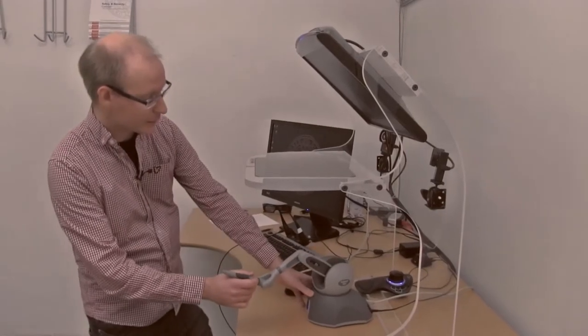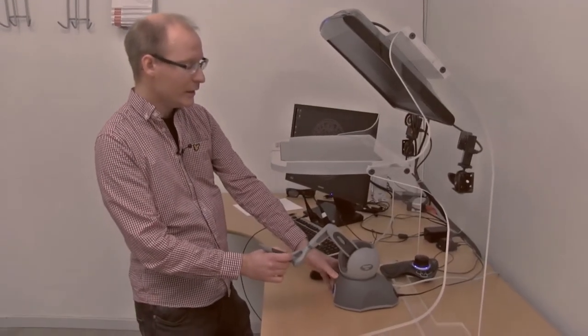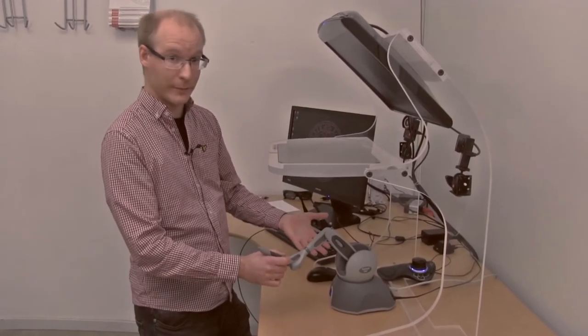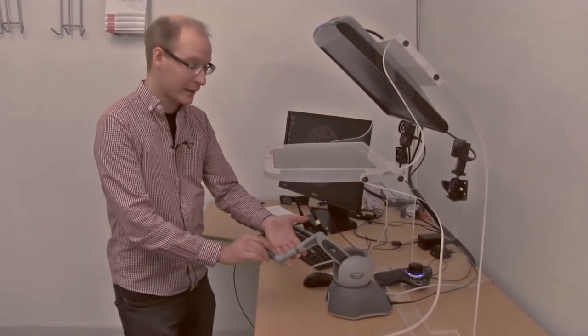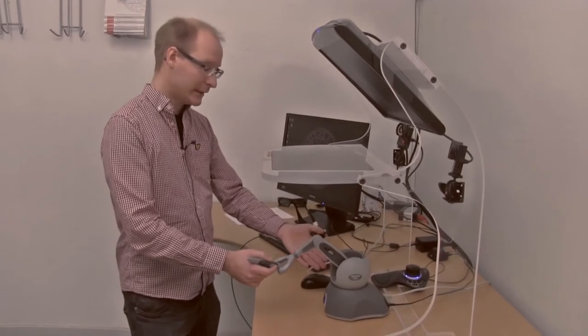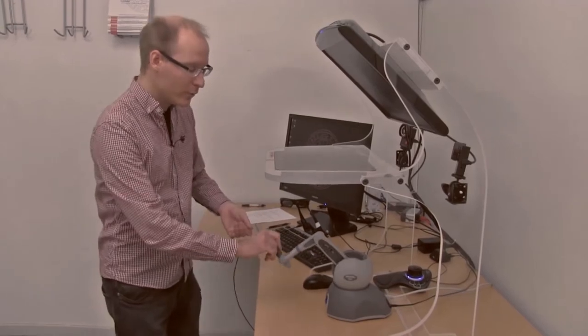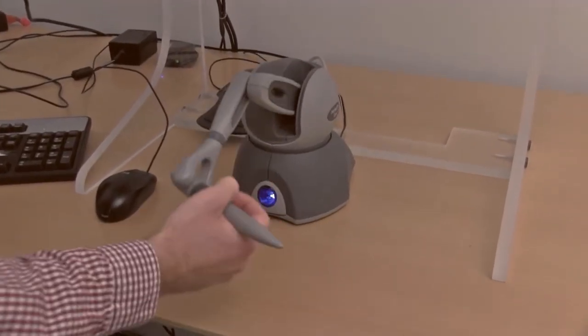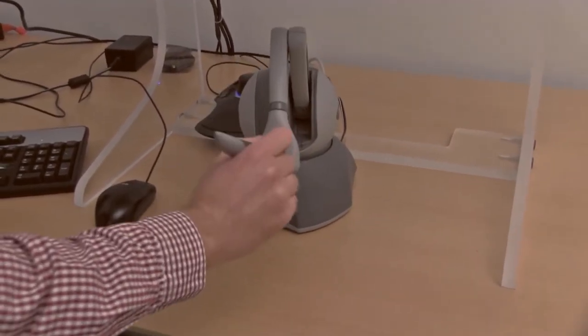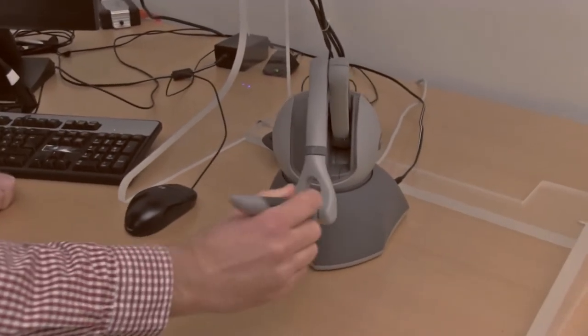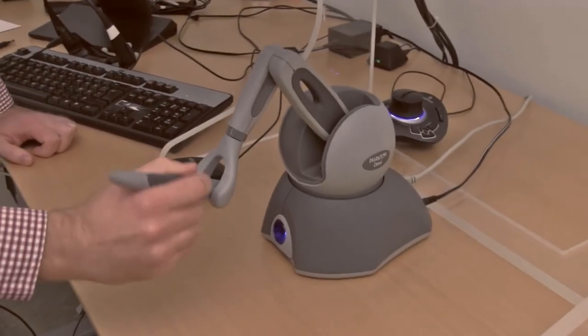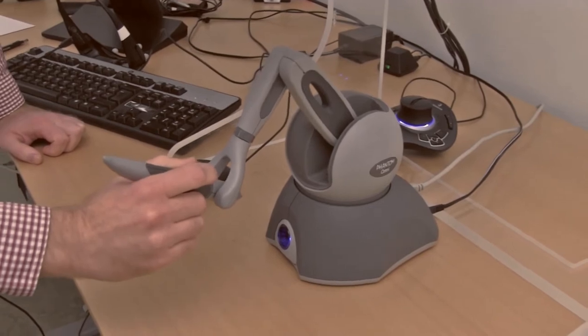And the haptic device placed here would give force feedback. This is basically a pen mounted on a small robotic arm that contains sensors and motors. So when I move the pen around in space or rotate it, the sensors will track the position very precisely. And the motors built into the device give force feedback.